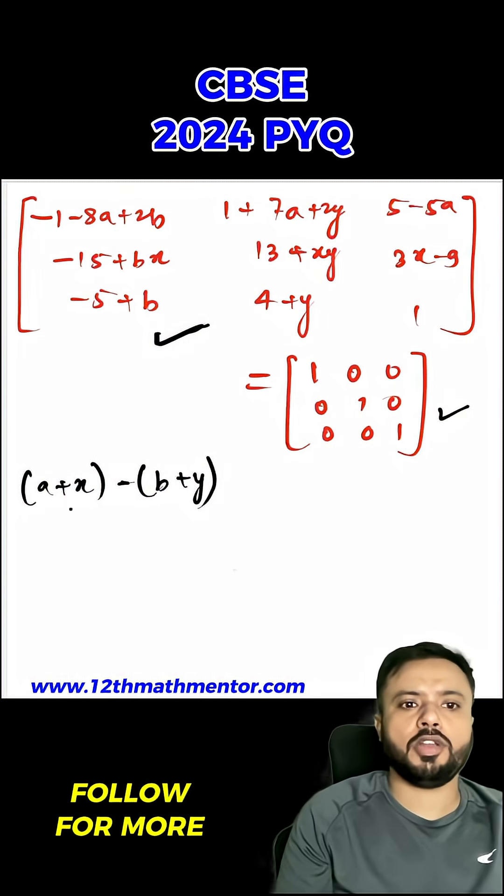Since we have to find the value of (a+x)-(b+y), we will equate all of those corresponding elements very carefully which can give me the values of these particular variables: a, x, b, and y.